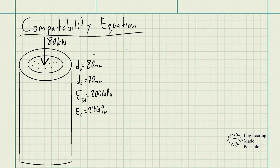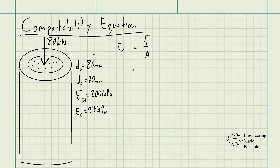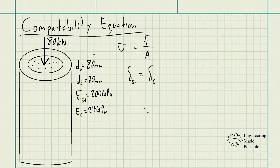The compatibility equation is used here. The deformation of the steel must equal the deformation of the concrete, since they work as one structure. If one deforms, the other must deform the same amount. This relationship lets us solve for how much force the steel experiences and how much force the concrete experiences, and then we can solve for the stresses in each material.